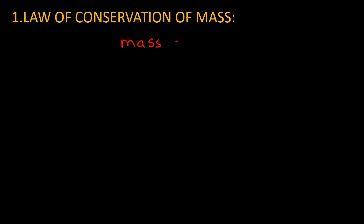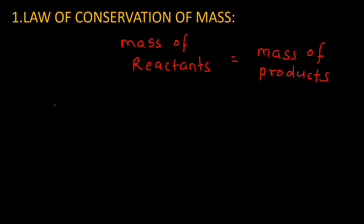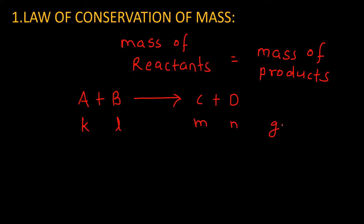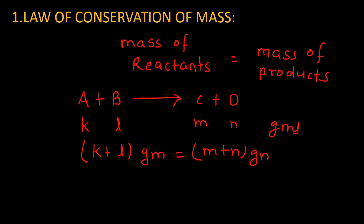The law of conservation of mass states that in any chemical reaction, the total mass of reactants and total mass of products will be the same — that is, mass of reactants equals mass of products. For instance, if A and B are two reactants giving C and D as products with masses K, L, M, N grams respectively, then K plus L will always equal M plus N.